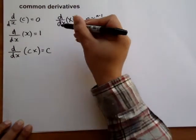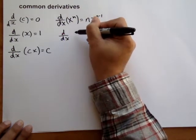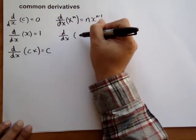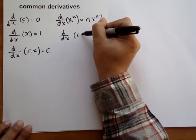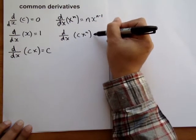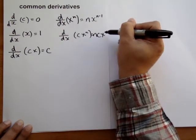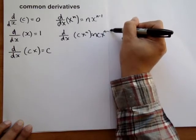The derivative of a constant multiplied by x to the n is n times the constant times x to the n minus 1.